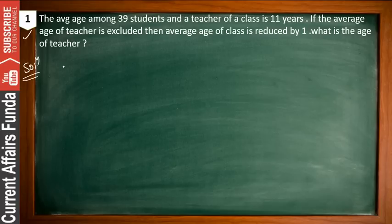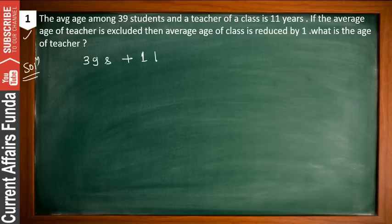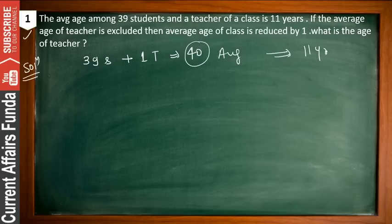There are 39 students plus 1 teacher, that means there are basically 40 units. The group of 40 has an average of 11 years. So from here we can calculate the total: 11 into 40 equals 440.